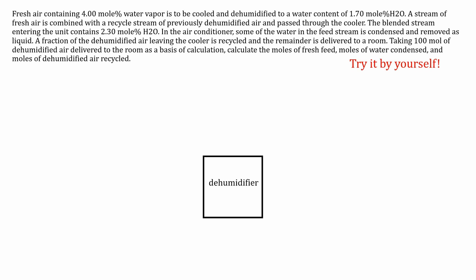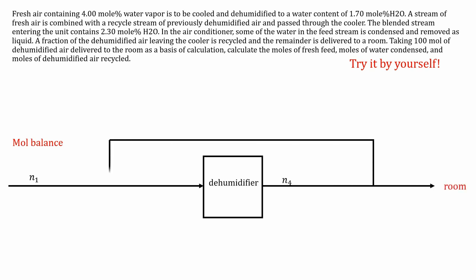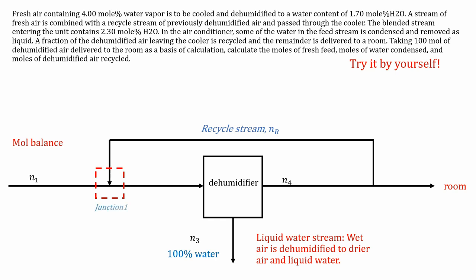We have our humidifier with our mass flow coming in. This time we're going to be doing a mole balance. So I have moles and our mole balance coming out into the room. And our recycle stream is going to be n_R. So for this example, we have a liquid water stream because wet air is dehumidified to drier air and liquid water. We also have our junction points. So we can label junction one and junction two, just like before.